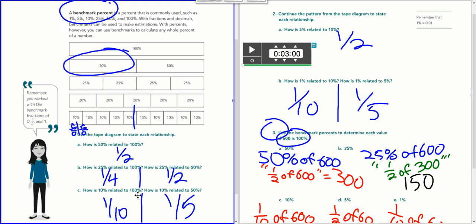10% is one-tenth of 100%. And then 10% would be one-fifth of 50%, because 50 is right here in the middle. So one, two, three, four, five of these 10%.